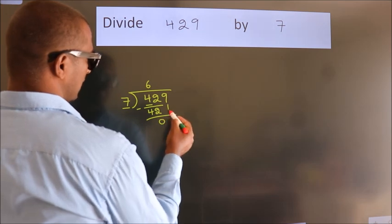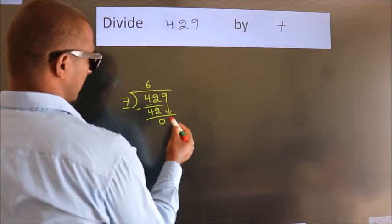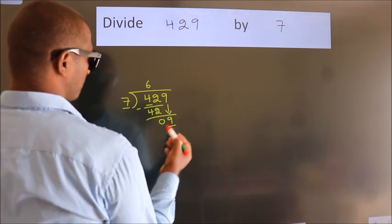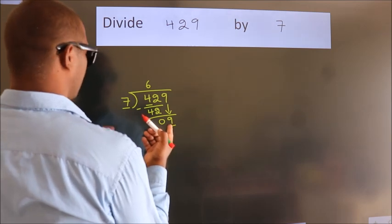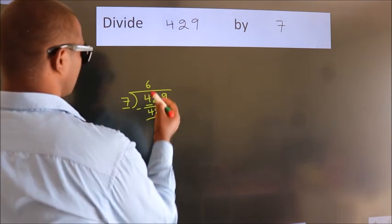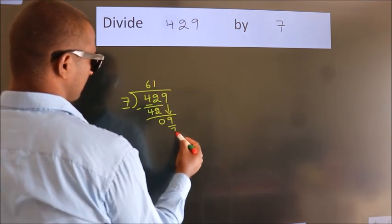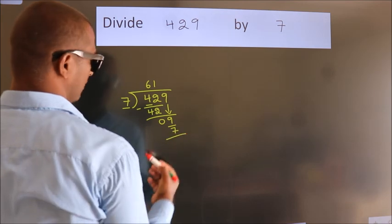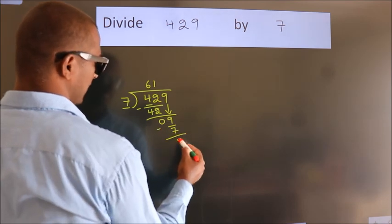After this, bring down the beside number. So 9 down. A number close to 9 in 7 table is 7 once 7. Now we subtract, we get 2.